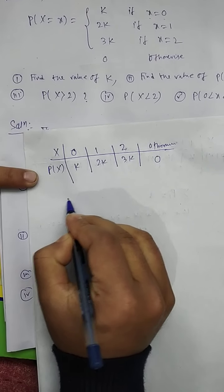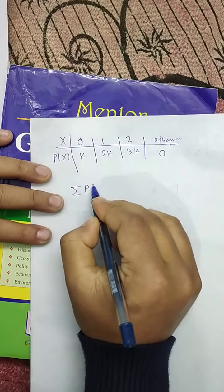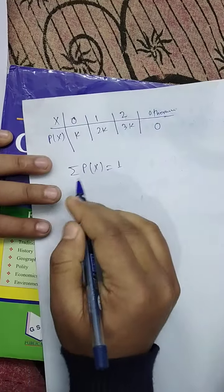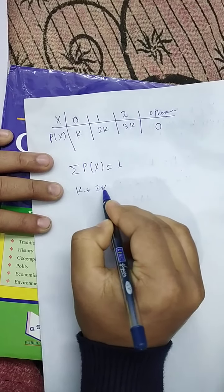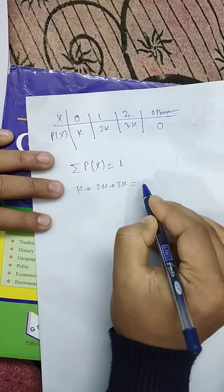Now, we know that summation Pi equals 1, so K + 2K + 3K = 1.